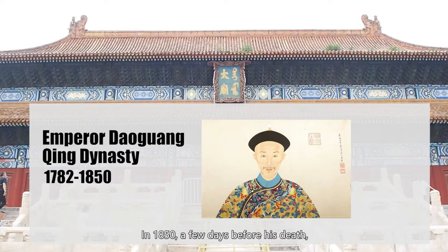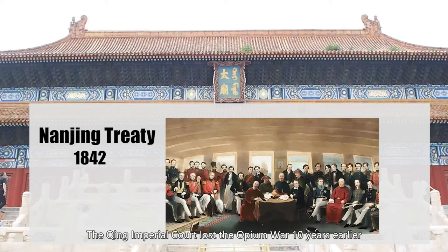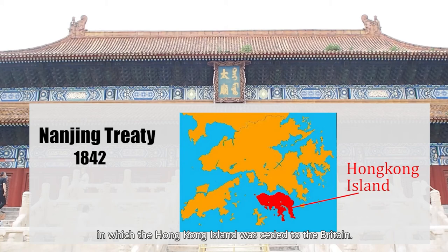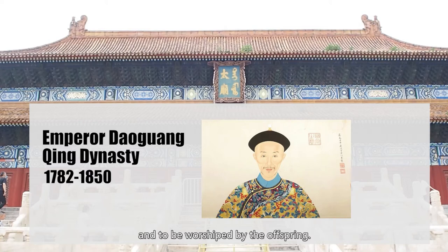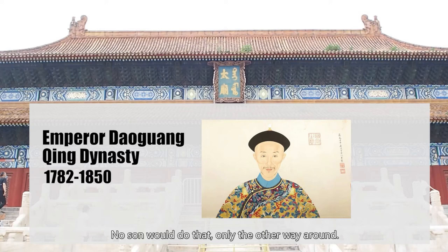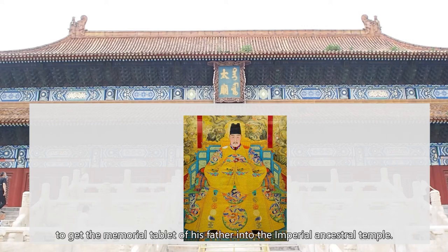That was Emperor Daoguan of the Qing Dynasty. In 1850, a few days before his death, he made a will asking his crown prince not to put his memorial tablet in the ancestral temple after his death. The Qing Imperial court had lost the European war 10 years earlier and was forced to sign the Nanjing Treaty, in which Hong Kong island was ceded to Britain. The cession made Emperor Daoguan feel he didn't qualify to stay with previous emperors. But his son didn't comply with his will in this matter — no son would do that, only the other way around.